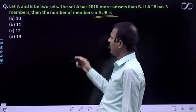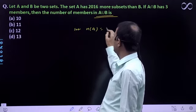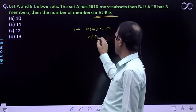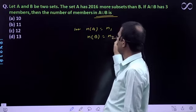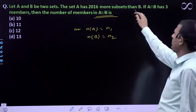Here are two subsets A and B. Let the number of elements in set A equal n1, and the number of elements in set B equal n2. The set A has 2016 more subsets than B.